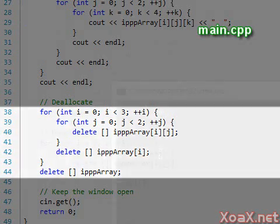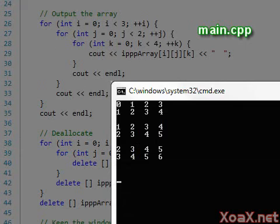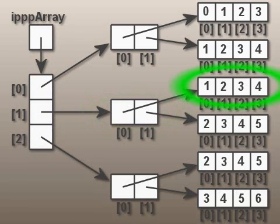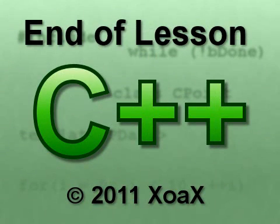Executing our program, we see the output of the entries of our array. 3D arrays are somewhat difficult to visualize, so we just output three 2D arrays that are each 2 by 4. Here we have the layout of our array in memory. Everything starts from our triple pointer, which points to the beginning of our array of double pointers. Each of these double pointers points to an array of pointers, which in turn point to an array of 4 ints. These ints contain the values of our array. Notice that our 3D array is just like our 2D array with an additional layer. We can extend this method further to create arrays of any number of dimensions that we wish.